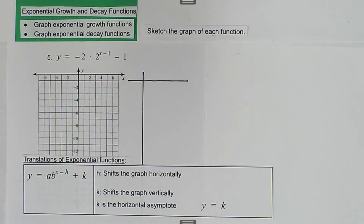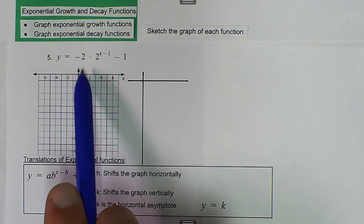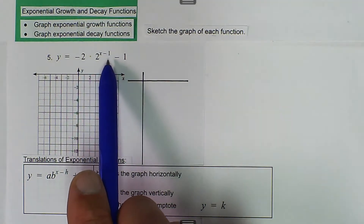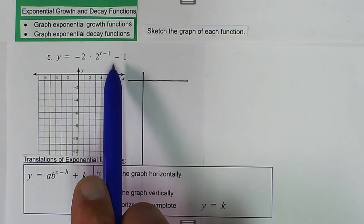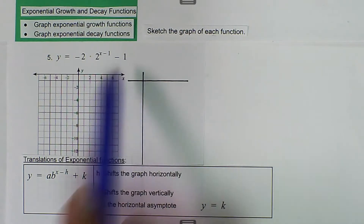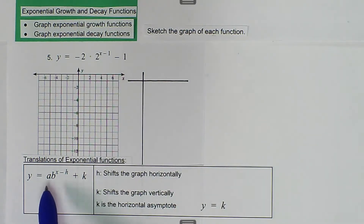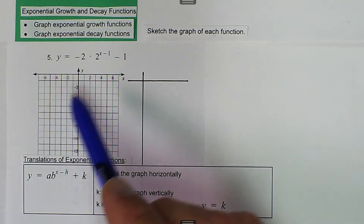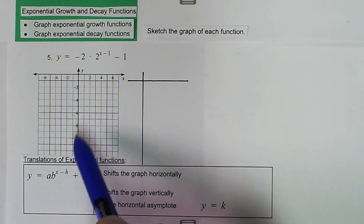We are talking about exponential growth and decay functions, and we want to graph exponential functions. So here we have to sketch the graph, and we have y equals negative 2 times 2 raised to the x minus 1, minus 1. So in this case we know the a value is negative 2, so it's going to reflect our graph so it opens down.